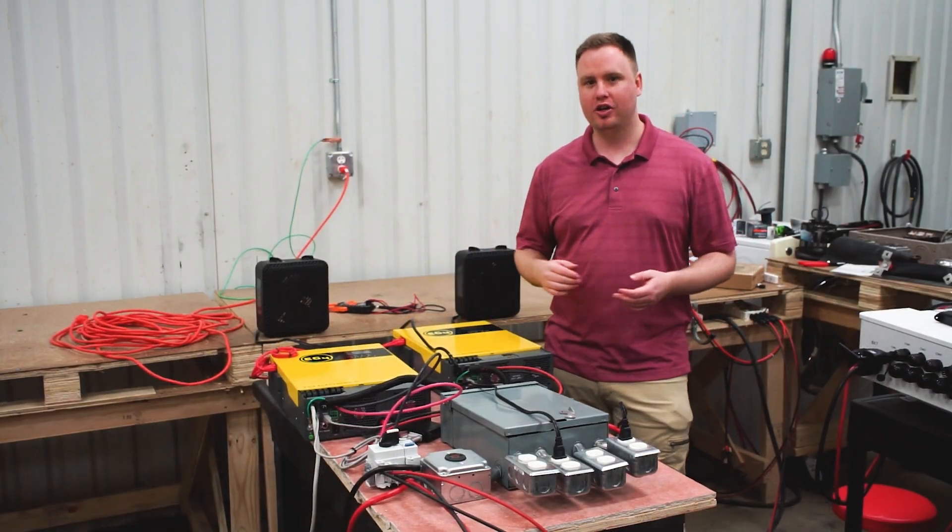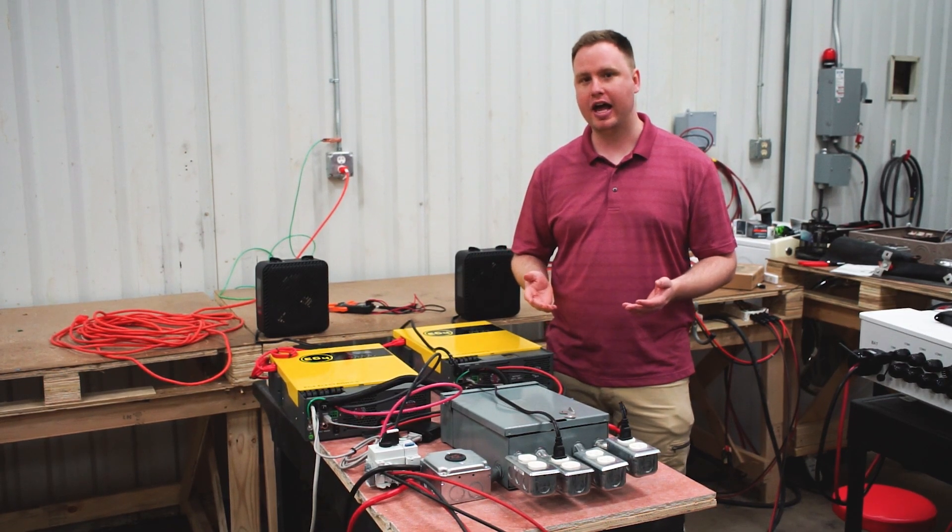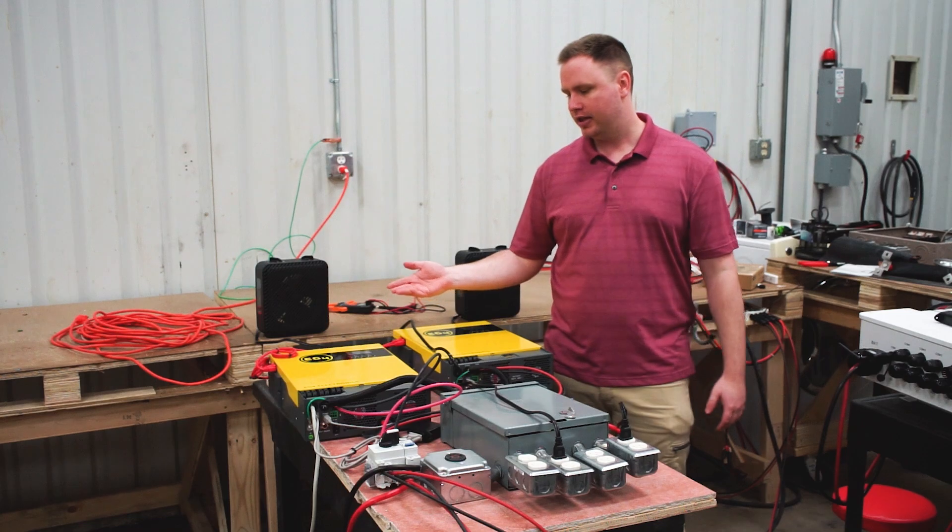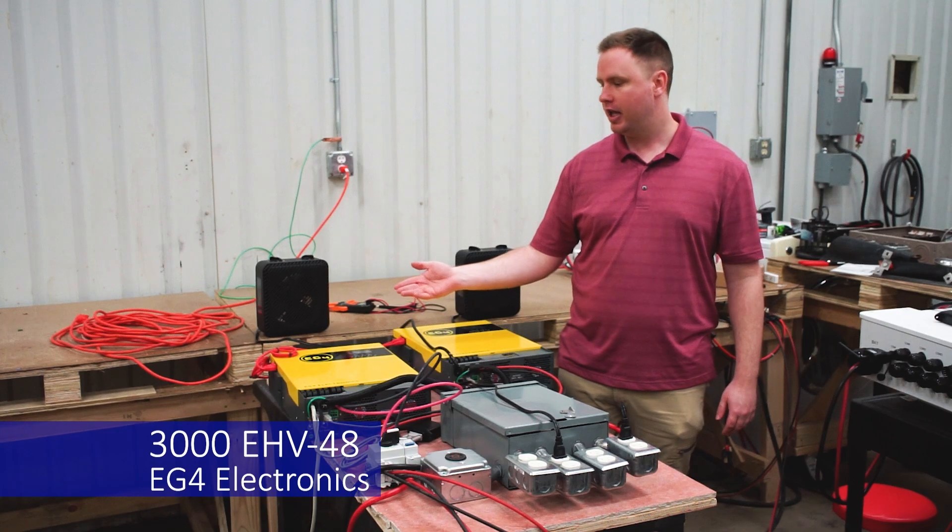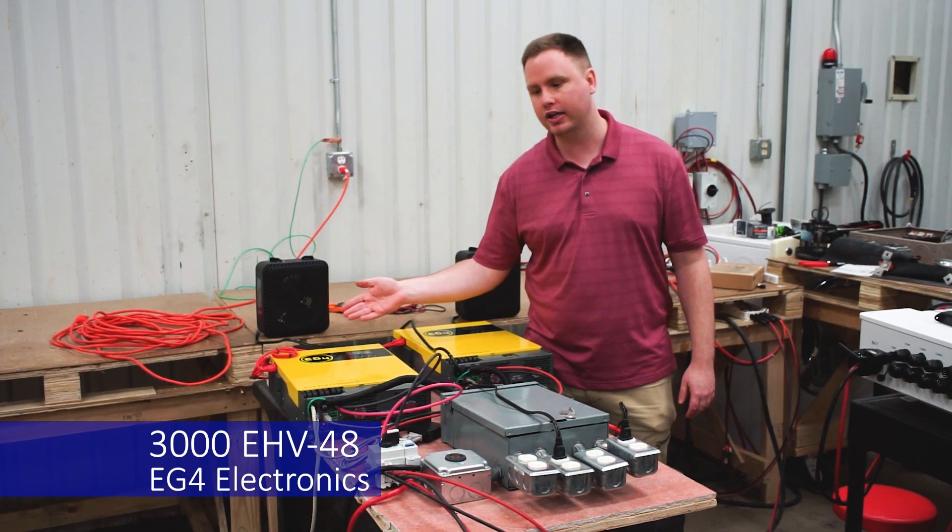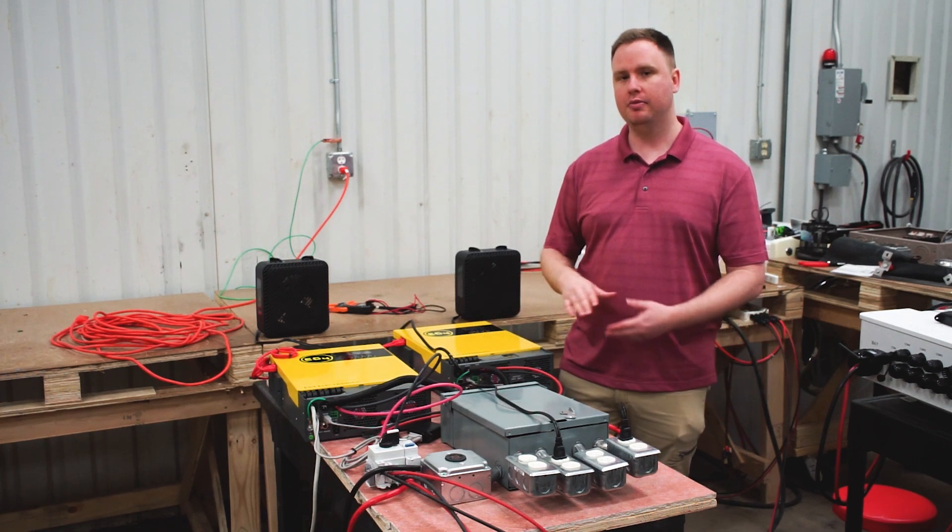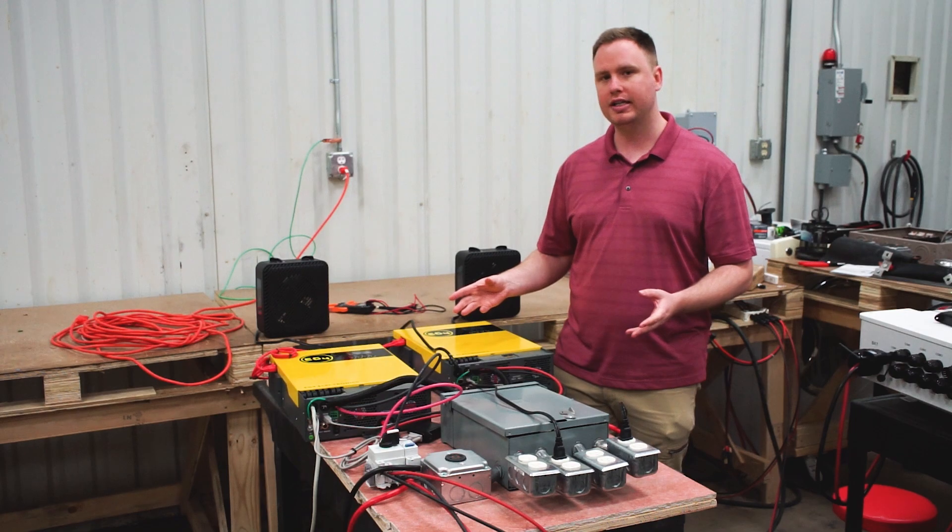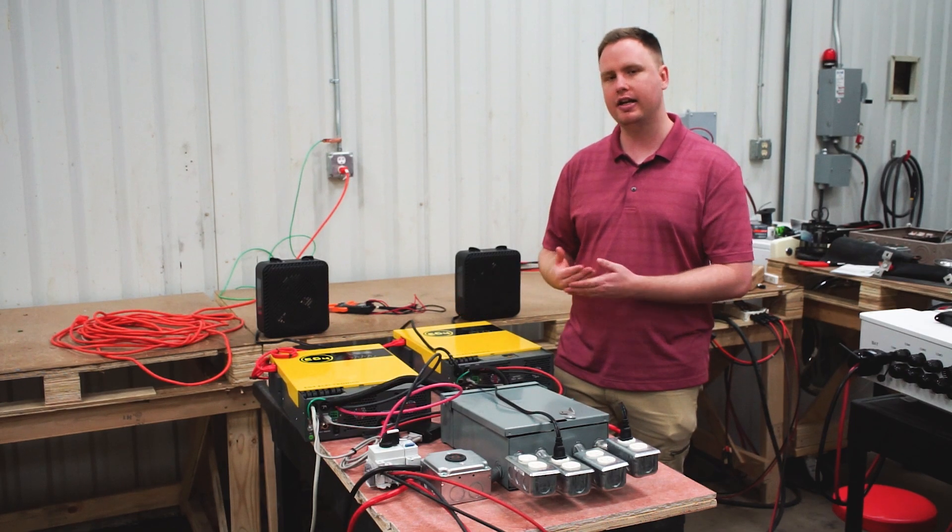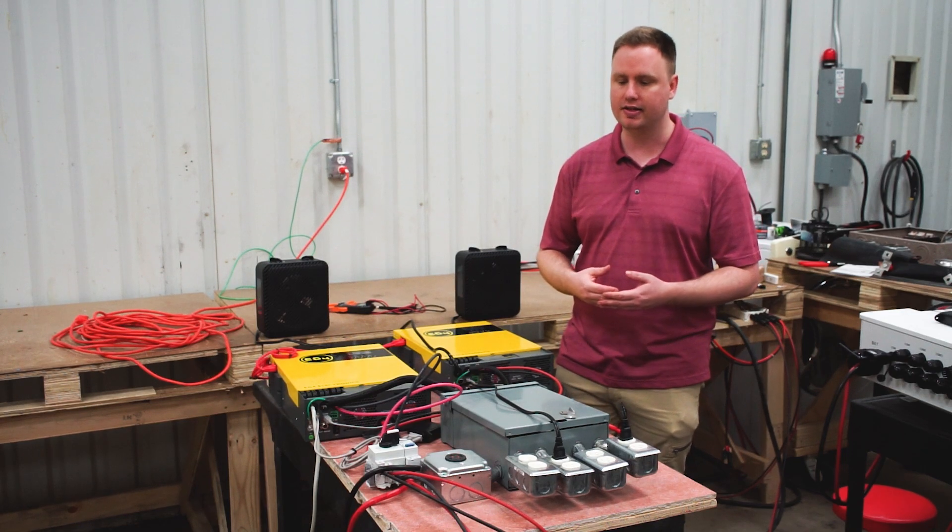Hello everyone, Richard from EG4 Electronics here and today I'm excited to show you guys our new inverter. This is the 3000 EHV-48, an inverter by EG4 Electronics. This is a 3 kilowatt inverter that allows you to input up to 5000 watts of solar. I'm going to do a quick demo showing you how to set it up, what you can expect when you're using it, and some of the functions and features.